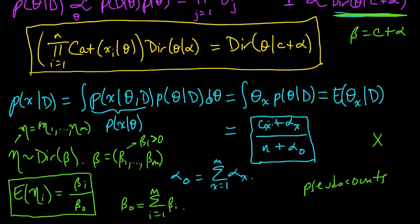but you can remember this by thinking of these alpha parameters in your Dirichlet prior as these sort of pseudocounts. And then under that interpretation, this is just a sort of very natural thing as a sort of empirical probability. So that's just an easy way to remember it.